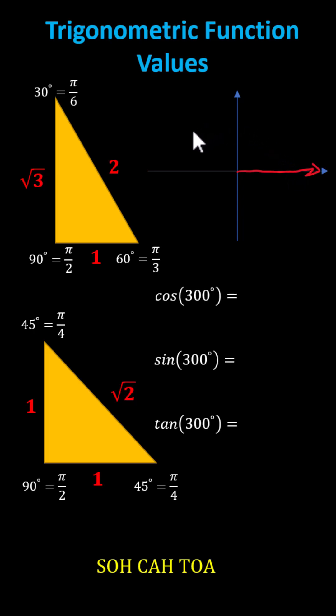Rotate to the negative x-axis, we have 180 degrees. Rotate to the negative y-axis, we have 270 degrees. We need to rotate 30 degrees more counterclockwise for the terminal side of 300 degrees, which is here.